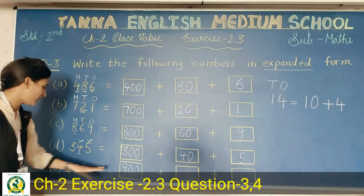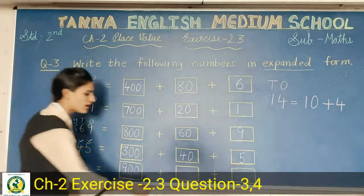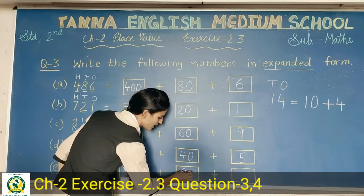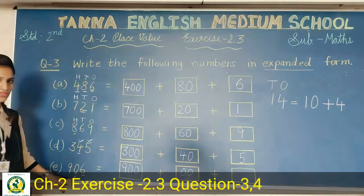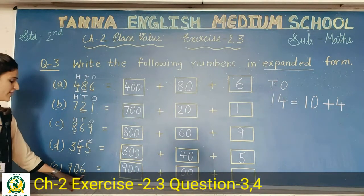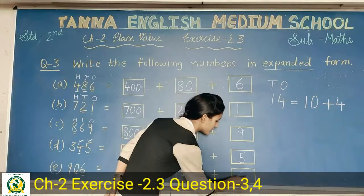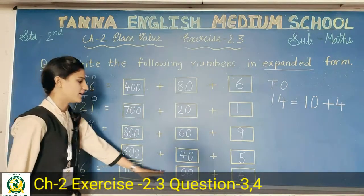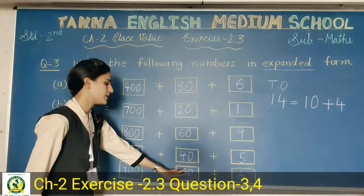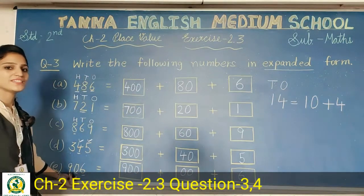Last: nine hundred and six. Nine is at hundreds place — nine hundred, two zeros. Then at tens place there is zero, so simply write zero. Ones place has six, so write six. Nine hundred and six — we write zero at tens place because there is nothing at tens place, it is zero tens.